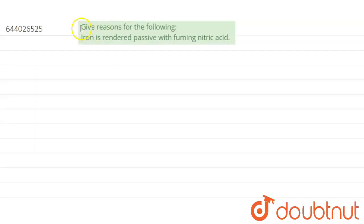Hello, so the question is give reasons for the following. Iron is rendered passive with fuming nitric acid. For this, I'll draw a diagram.